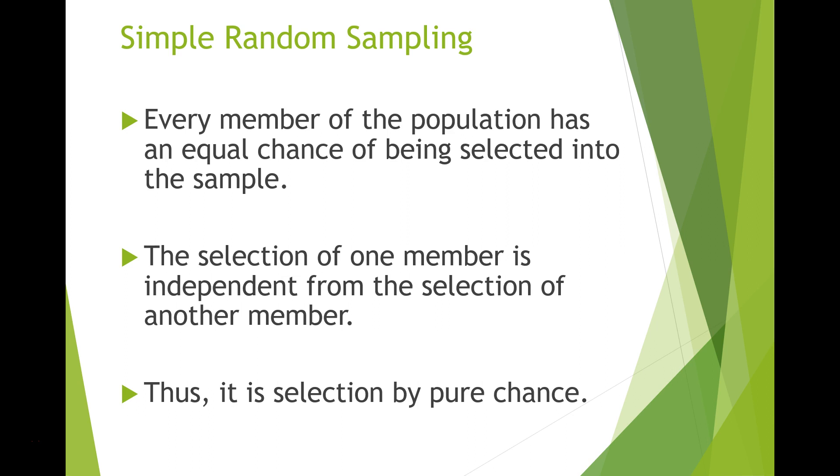Simple random sampling occurs when every member of the population has an equal chance of being selected into the sample. In addition, the selection of one member is independent from the selection of another member. So in theory, the strategy of simple random sampling involves selection into a sample by pure chance.